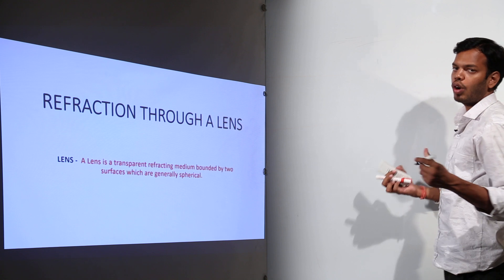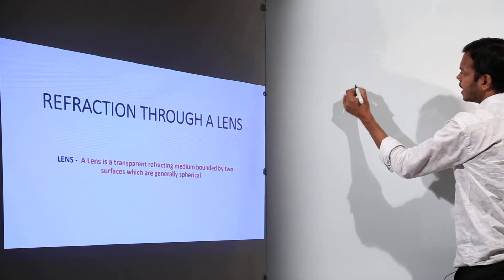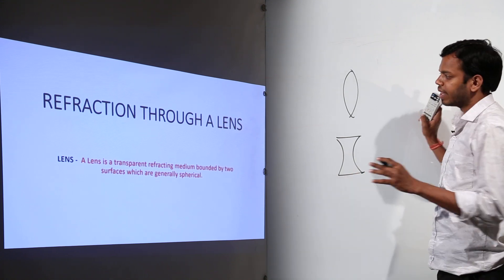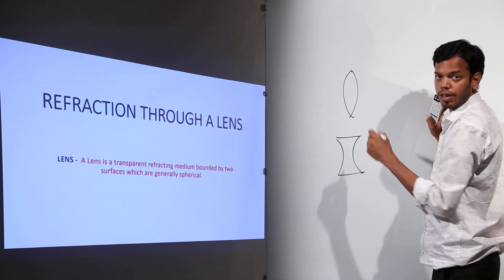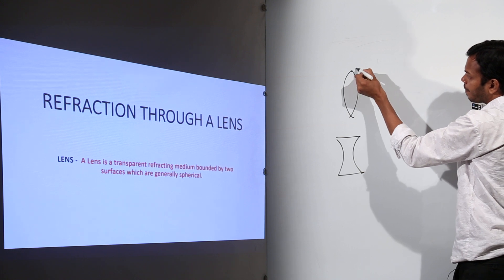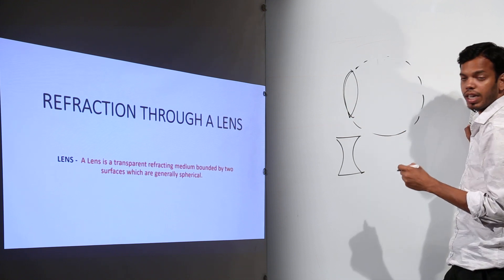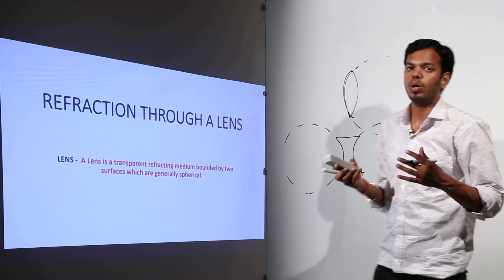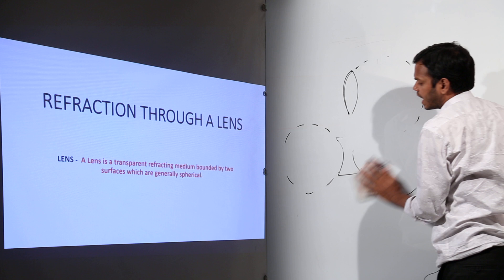You have already done this chapter in class 9th as well, which was refraction and lens. Lenses are basically of two types: one is convex and another one is concave. The definition is that a lens is a transparent refracting medium bounded by two curved surfaces which are generally spherical. By 'generally spherical' they mean that if the surface is extended through the edges, it will form a complete sphere. The curvatures are not just any simple curvature — they are actually part of a spherical structure.